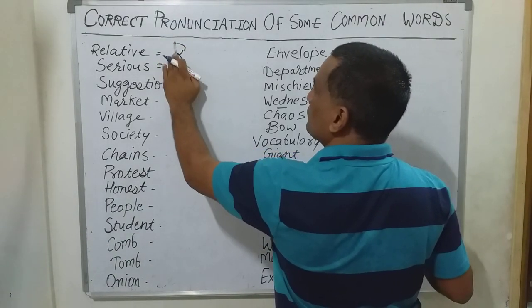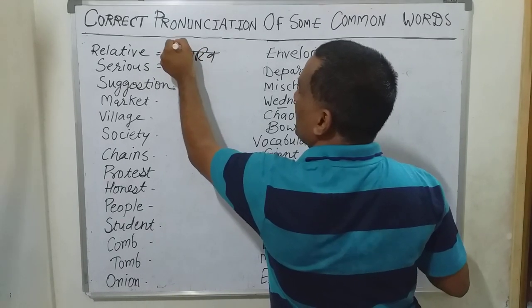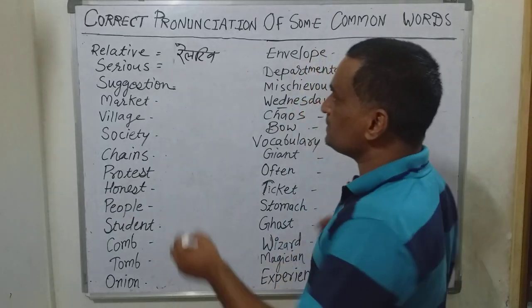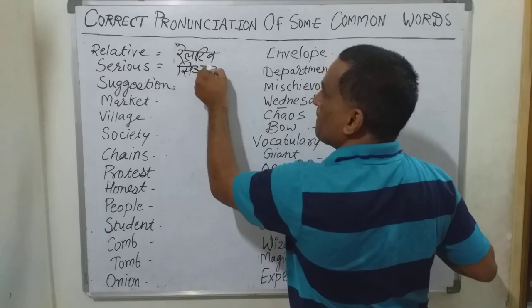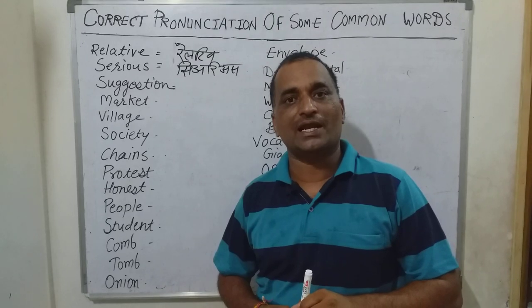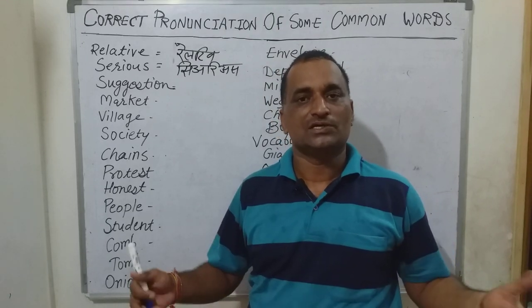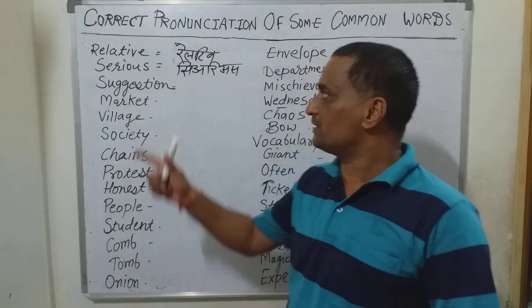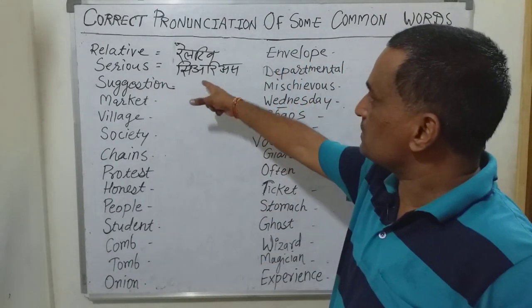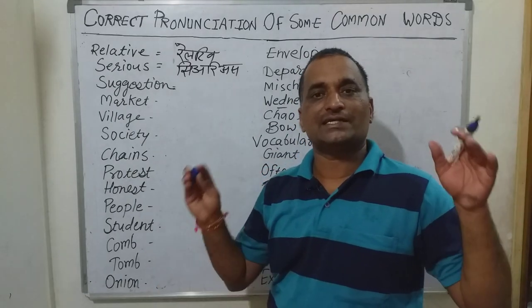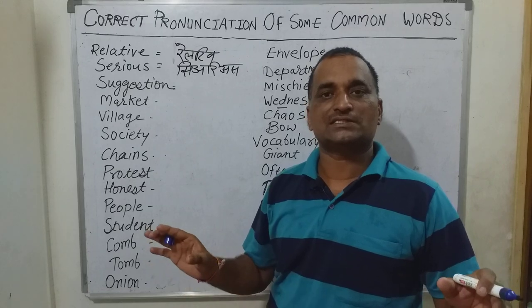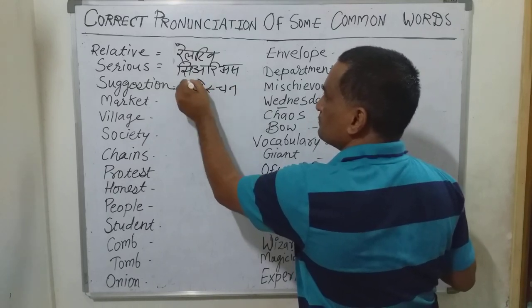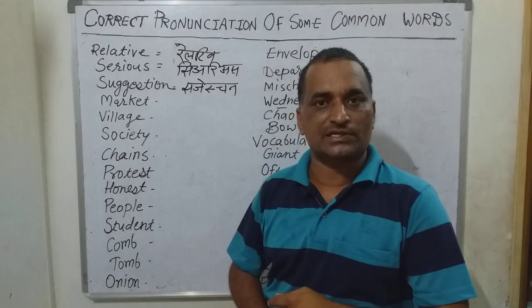The first word is 'relative' — written as R-E-L-A-T-I-V-E, and many people call it 'relative,' but the correct pronunciation is 'relative.' Next is 'serious' — we have so far spoken this word as 'serious,' but the correct pronunciation is 'serious,' and this is indeed a serious problem. Next is 'suggestion' — just as we speak 'question,' 'congestion,' and 'digestion,' in the same way 'suggestion' should be spoken as 'suggestion.'